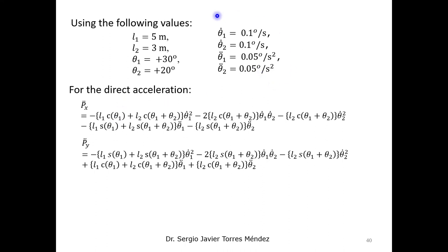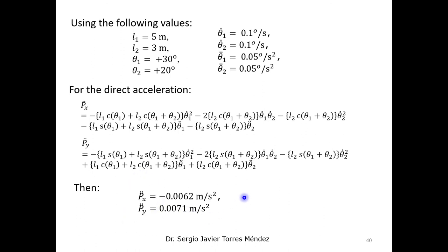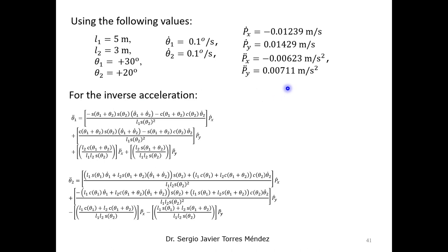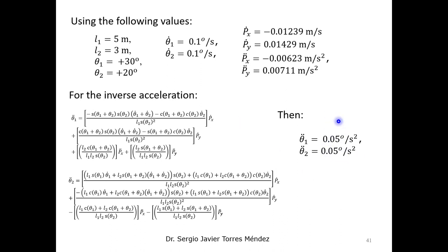Now let's check our theoretical results. First, for the direct acceleration using these numerical values, substituting into our theoretical equations, we obtain the numerical results for the end-effector accelerations. For the inverse acceleration, using these numerical values, we obtain the joint variable accelerations. In this final result, we also have the transformation for the units in degrees per square seconds.